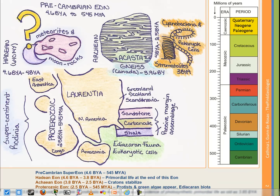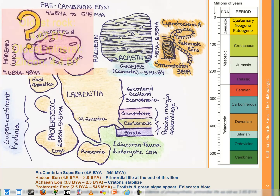The oldest rock we have dated is about 4.03 billion years old. The oldest mineral is also from the Hadean, dating to about 4.406 billion years ago — very close to the oldest age that exists for this Earth. Zircon is a very tough mineral and one of the most preferred minerals to use for radioactive dating methods.